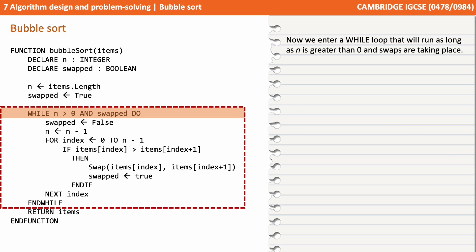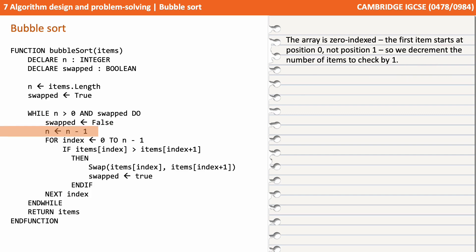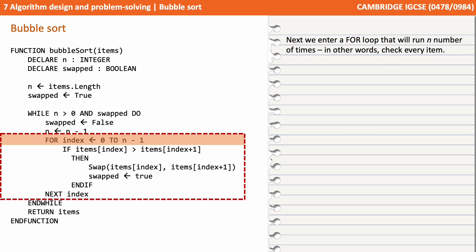We now set n to the length of the items array and initialize our swap flag to true. We then enter a while loop which will run as long as n is greater than zero and swaps are still taking place — this represents a pass of our algorithm. At the start of each new pass through the while loop, we set the swap flag to false, assuming no swap has been found until we discover otherwise. Our array is zero-indexed, meaning the first item starts at position zero, so we decrement the number of items to check by one. Next we enter a for loop which will run n number of times, checking every item which needs checking.